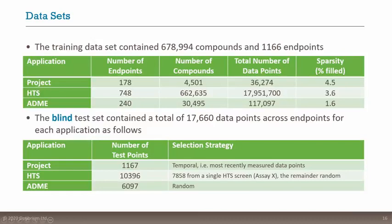For the high-throughput screening data, this was a much larger dataset: 750-odd endpoints over half a million compounds. The ADME set was somewhere in between: 240 endpoints, about 30,000 compounds. This data was very sparse — only 1.6% of compound–assay pairs had actually been measured; over 98% of that data was missing. This makes it very difficult to use as input to machine learning unless you're using an approach designed for it.